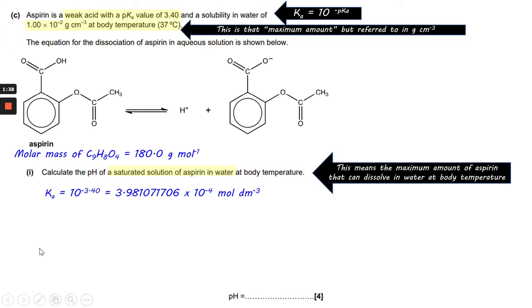So we'll need to think about the molar mass of aspirin. Aspirin is C9H8O4, which gives you a molar mass of 180 grams per mole. So that means the number of moles of aspirin in 1 times 10 to the minus 2 grams is 5 times 10 to the minus 5 moles.